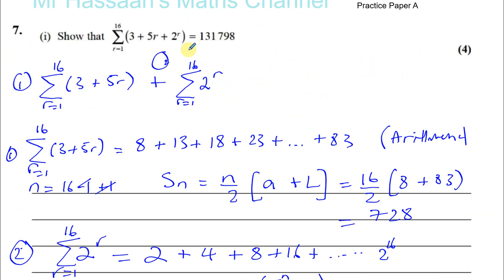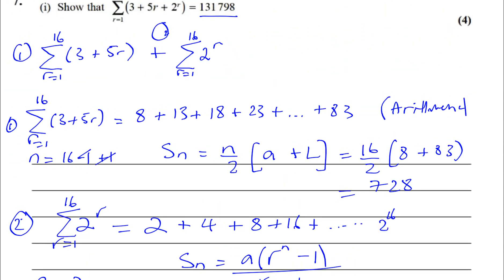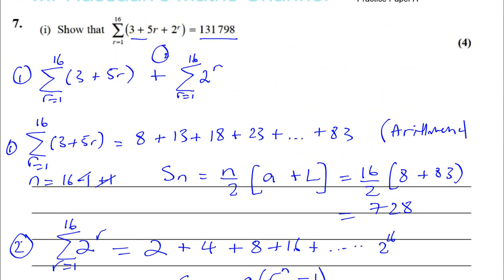So that's a quick way of doing it by splitting it up into two parts — arithmetic and geometric. Some of my students actually wrote out every single term from R equals 1 to 16 and added them together, which still got the marks, but wasted time. I'm going to do part 2 on the next video because my computer needs a restart.